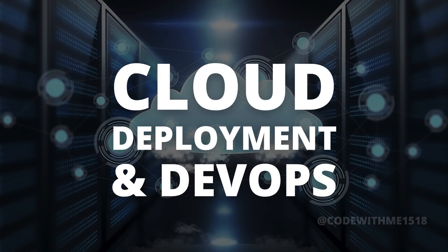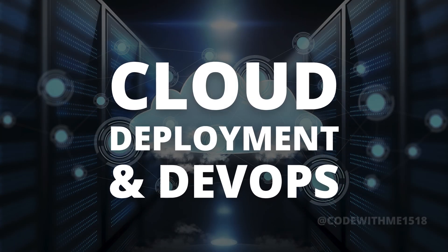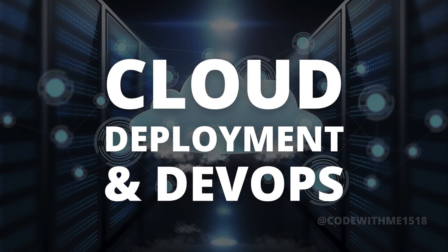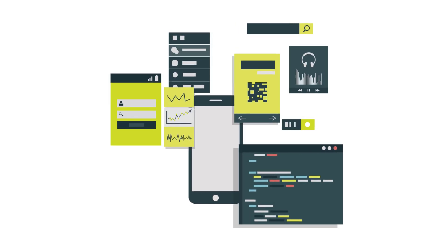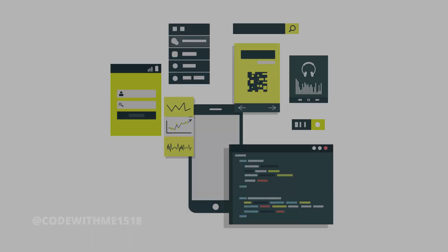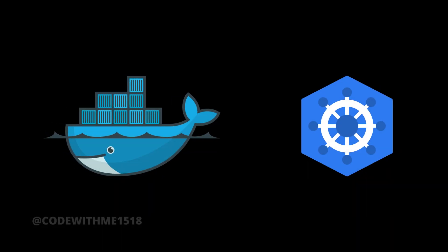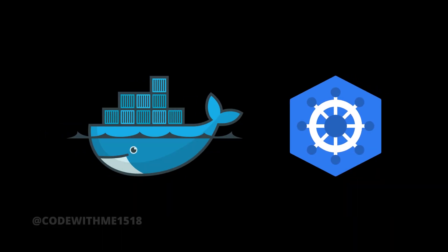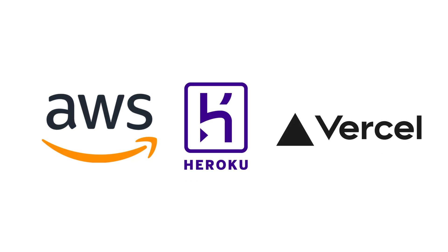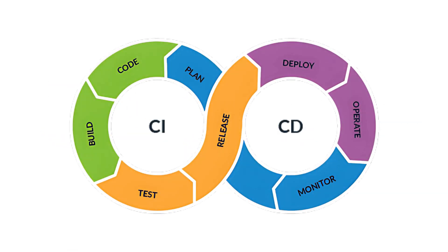Step 7: Cloud deployment and DevOps. A back-end developer should know how to deploy applications and manage servers. Learn Docker and Kubernetes, deploy projects on AWS, Heroku, or Vercel, and set up CI/CD pipelines for automated testing and deployment.